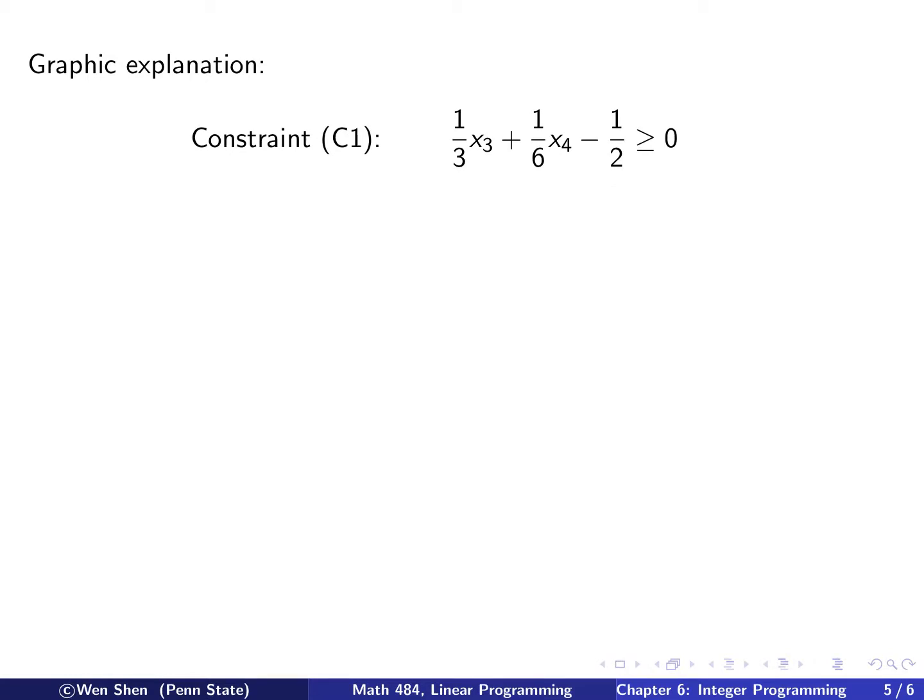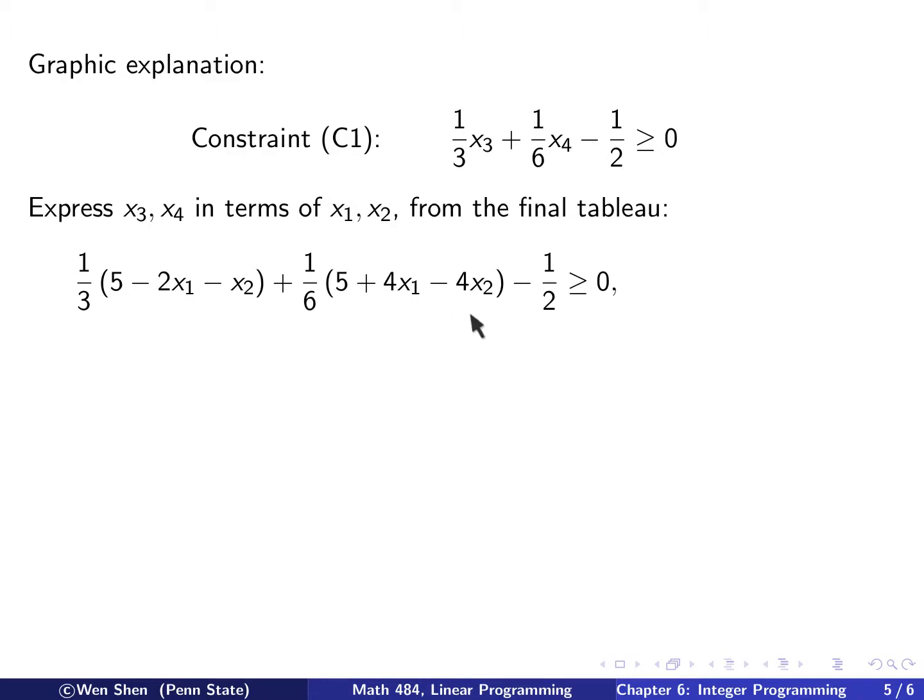So again, before we quit, let's take a look at the graphic explanation of the two constraints we added. Let's look at the first constraint, C1. We rewrite it, and that's what C1 is. And now we want to express this in terms of x1 and x2, and then recall x3, x4 are just the slack variables. You can find the expression. So this is x3, and this is x4 from the original problem. You easily get that, plug that in, then you get this inequality involving only x1 and x2. One can simplify, collect the like terms, and write out. And then here actually x1 exactly cancels, as you can see. And you only get x2, and you have x2 less than 2.